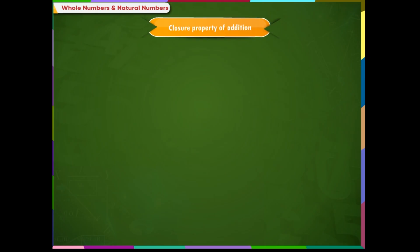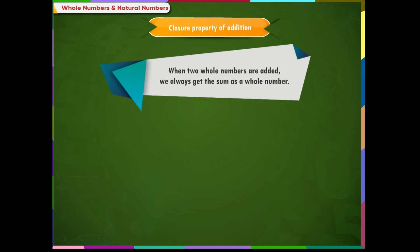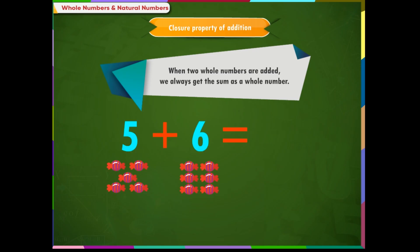Closure property of addition: When two whole numbers are added, we always get the sum as a whole number. For example, five plus six is equal to eleven, which is a whole number.